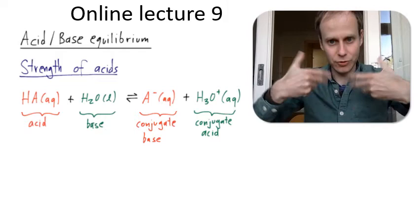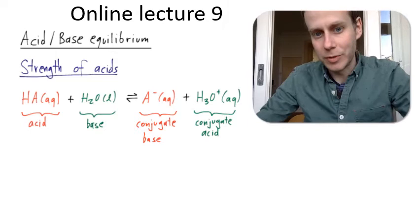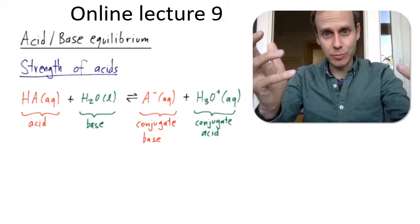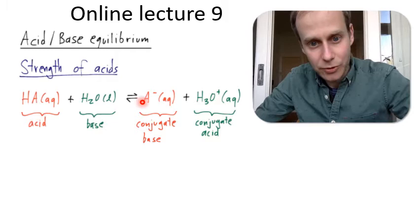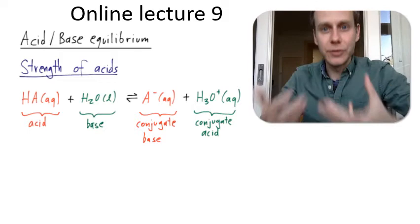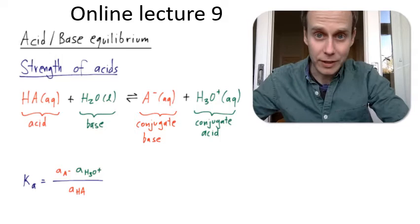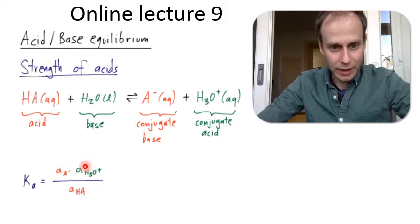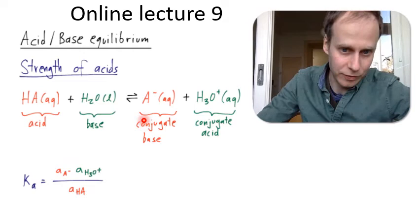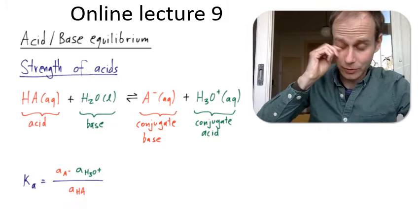The arrows I draw are back and forth because it's an equilibrium reaction. The acid's ability to donate a proton and the conjugate base's ability to accept a proton defines the equilibrium, which is characterized by the acid equilibrium constant Ka. I write it out here with the activities: in the numerator are the activities of the products, and in the denominator are the activities of the reactants.